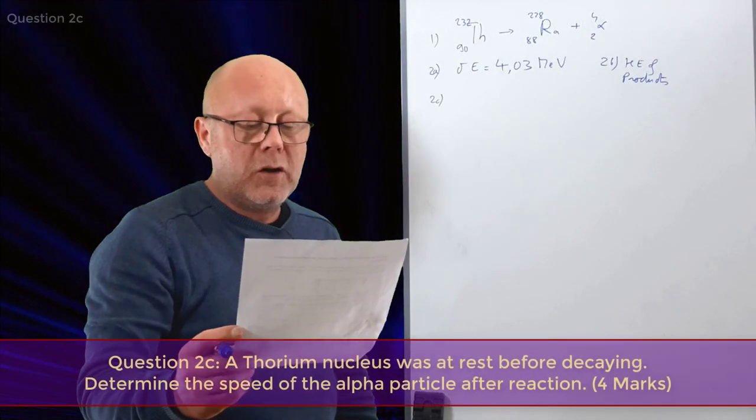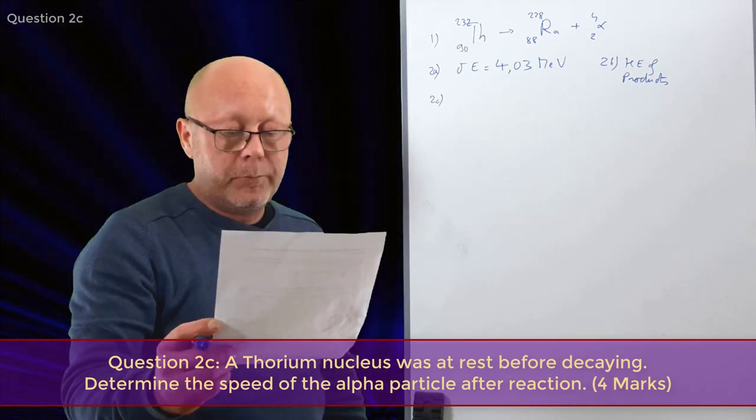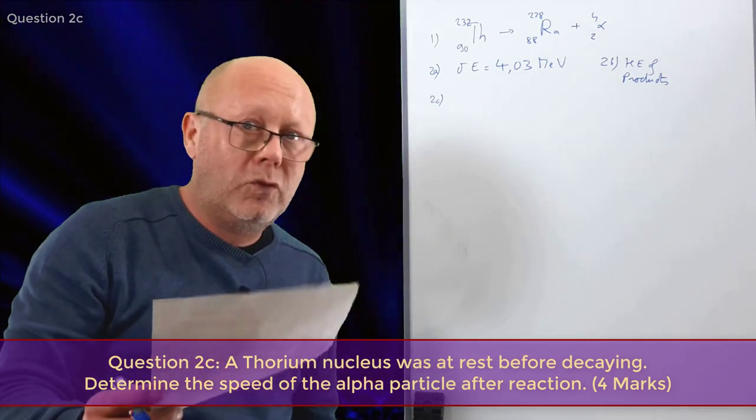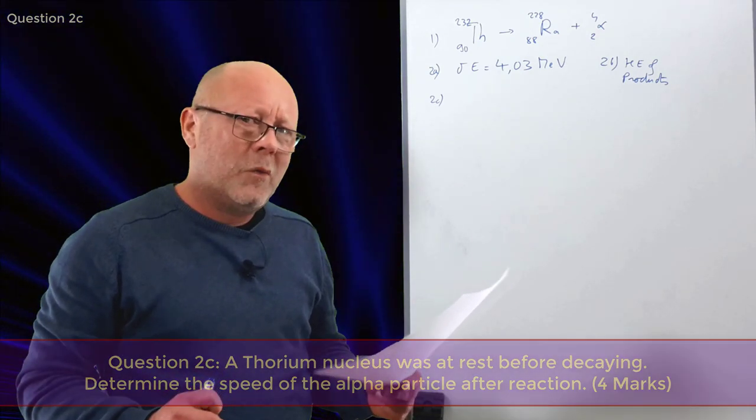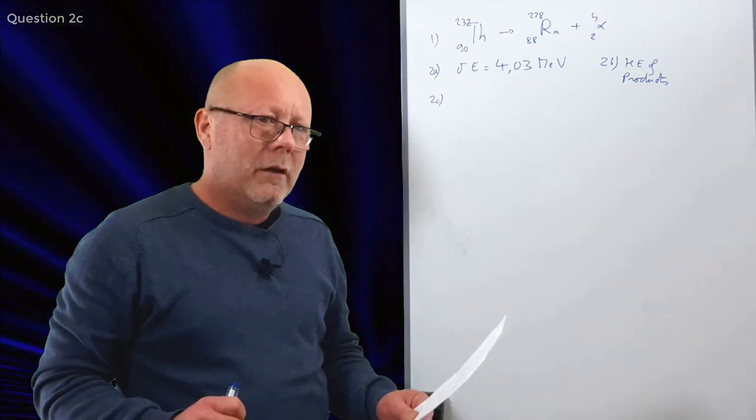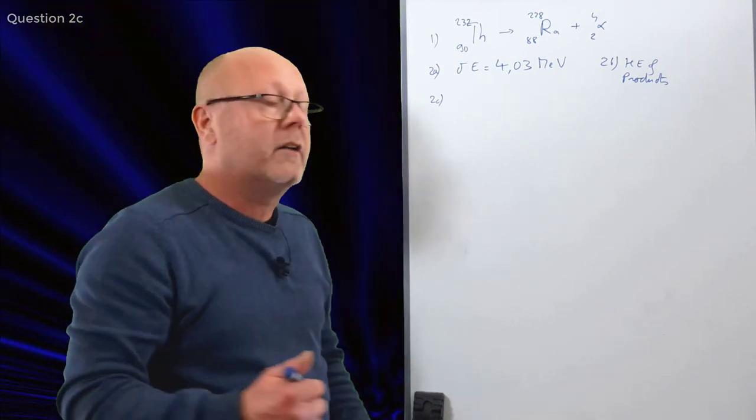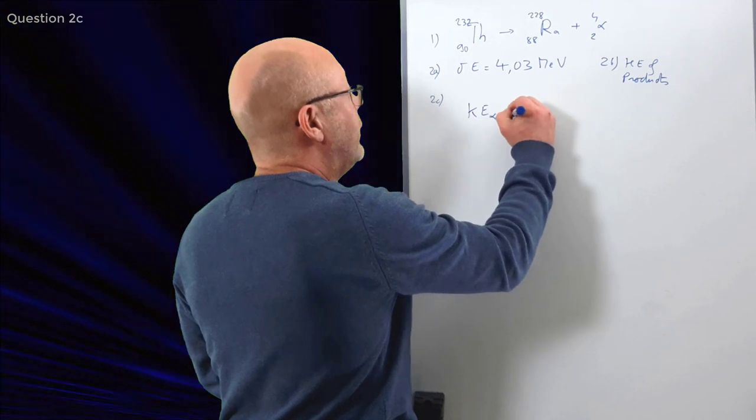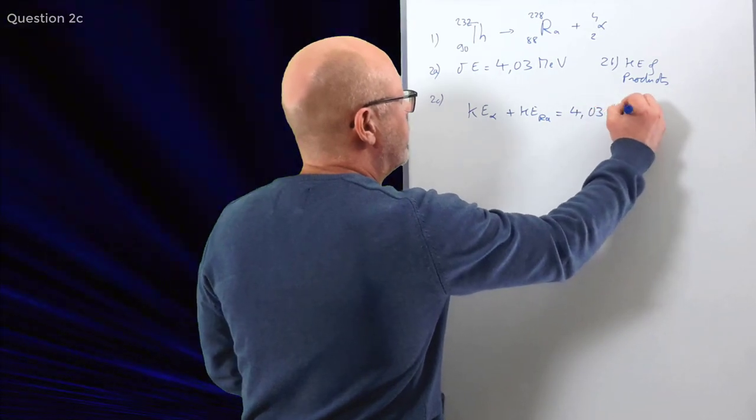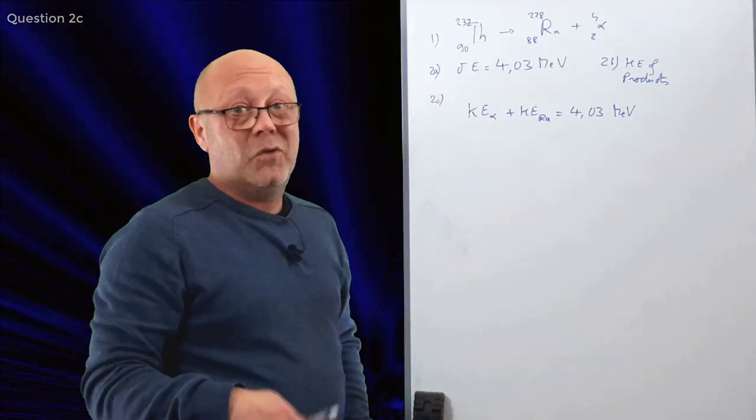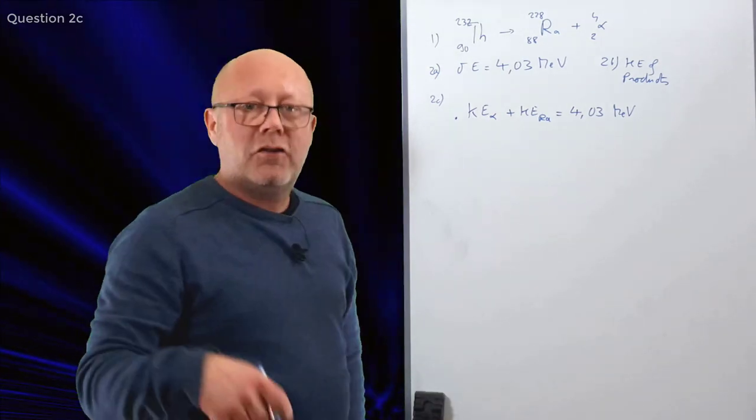Question 2C. A thorium nucleus was at rest before decay. Determine the speed of the alpha particle after reaction. Four marks. Yeah, four marks because that's a few steps to go through. We want the speed of the alpha particle. So, in other words, we want its kinetic energy. But we know that the energy released by the reaction goes to the kinetic energy of the products. So we know that the kinetic energy of the alpha plus the kinetic energy of the radon is equal to 4.03 MeVs. We have one equation, two unknowns. So we need to find another equation. And to do that, we're going to use conservation of momentum.